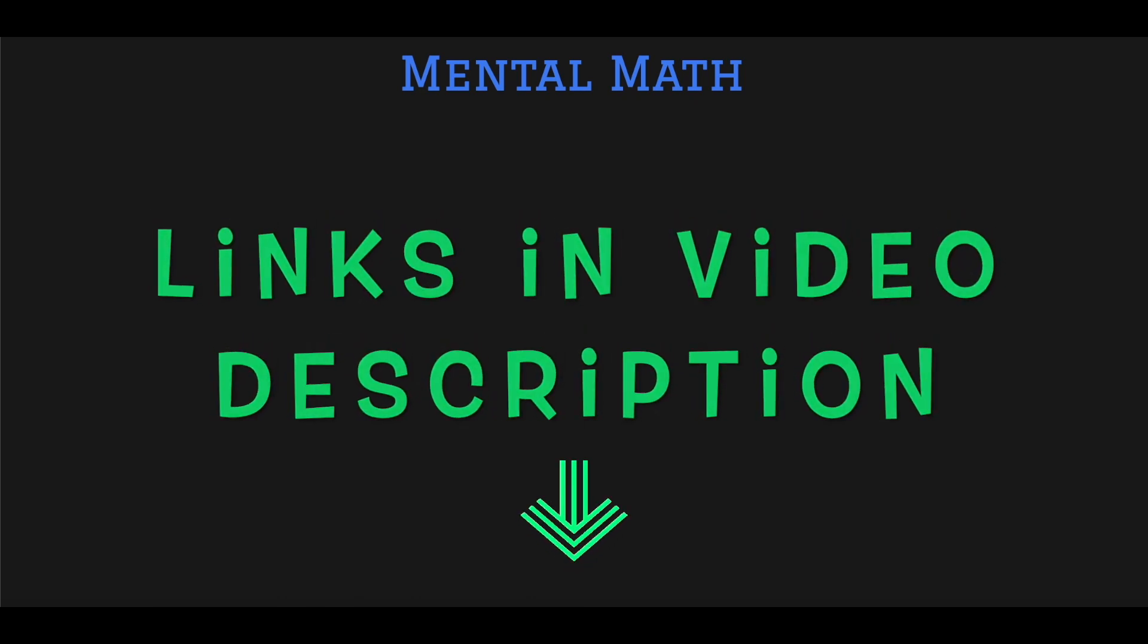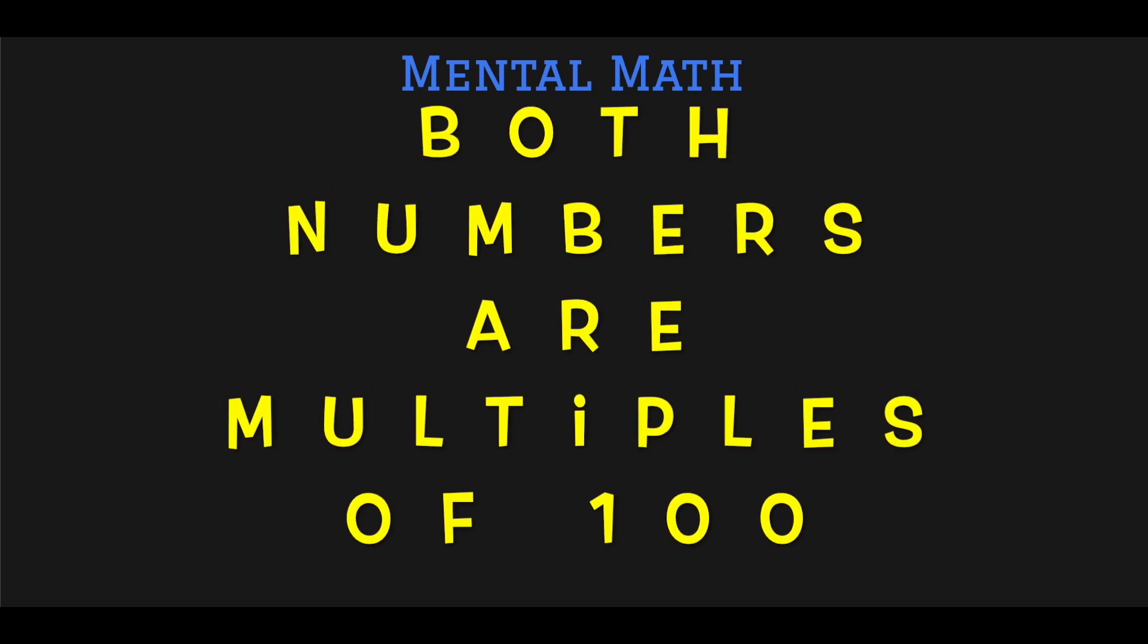So let's begin our class number 9 and we will be tackling the easiest question when we are adding three-digit numbers in our brain, and that is when both the numbers are multiples of 100.